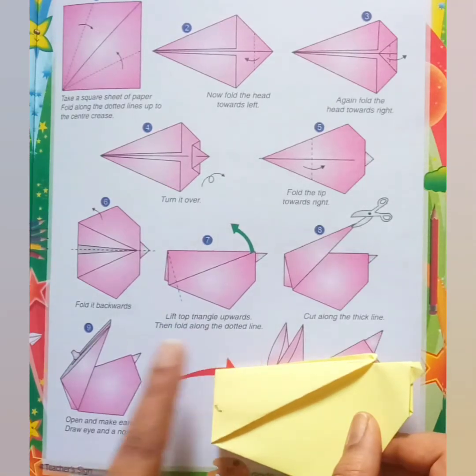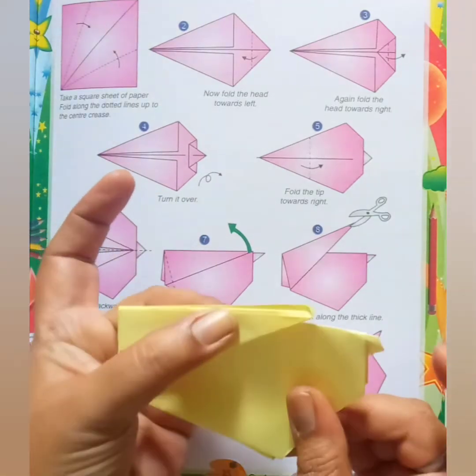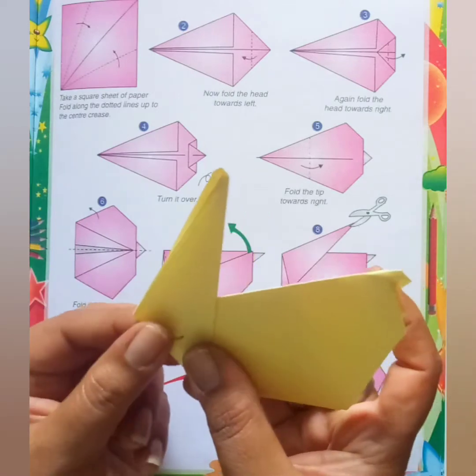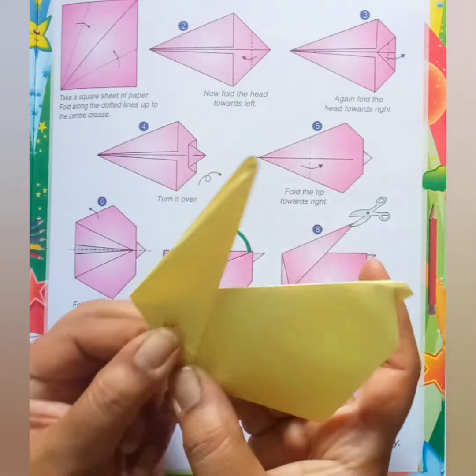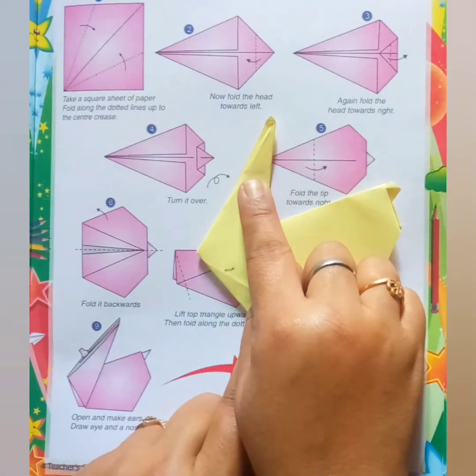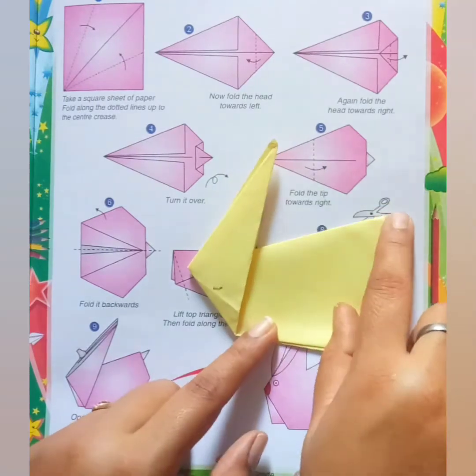Now seventh step is lift top triangle upwards then fold along the dotted lines. See, you have to lift it like this and press. Yes, these are the ears of rabbit and this is the face and this is the body and this is the tail.